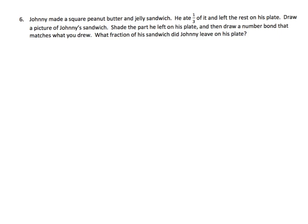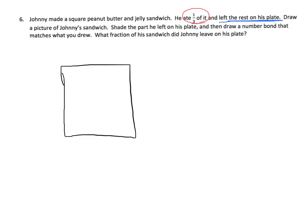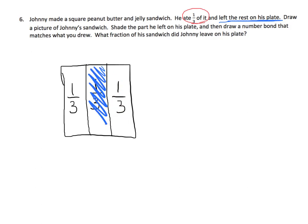The last problem: Johnny made a square peanut butter and jelly sandwich. He ate one third of it and left the rest on his plate. Draw a picture of Johnny's sandwich. It says square, so let's draw a square. He ate one third of it, so we're going to cut this into three equal sized slices. The directions say shade the part that he left on his plate — all the sections are one thirds, and this is the part that he left.